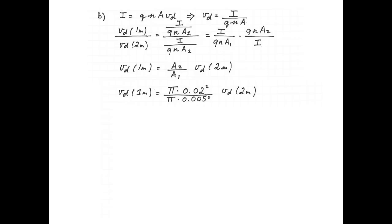Of course, the π's cancel. The result is that the drift velocity in the one meter segment is 16 times bigger than the drift velocity in the two meter segment.